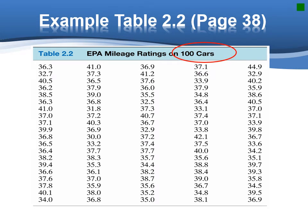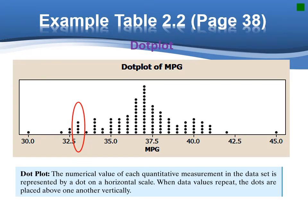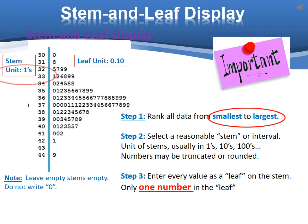Here is another example of a set of data of EPA mileage rating on 100 cars. A dot plot for the 100 EPA mileage ratings is shown in this figure. The horizontal axis of the figure is a scale for the quantitative variables. The numerical value of each observation is located on the horizontal scale by a dot. When data values repeat, the dots are placed above one another vertically.